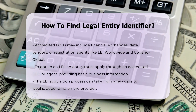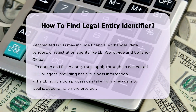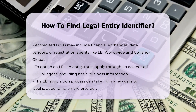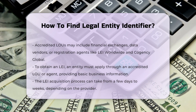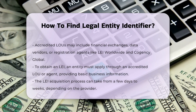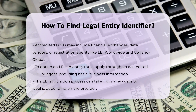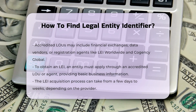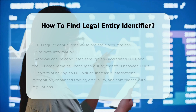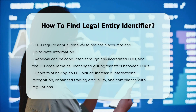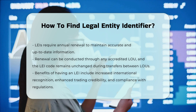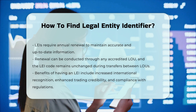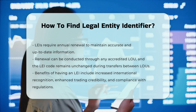Process of obtaining an LEI. To obtain an LEI, a legal entity must submit an application through an accredited LOU or a registration agent. The process typically involves providing basic business information, such as the entity's name, registered address, and ownership details. The LEI can be obtained within a few days to weeks, depending on the service provider. LEIs must be renewed annually to ensure the data remains accurate and up-to-date. This renewal can be done through any accredited LOU, and the LEI code remains unchanged even if transferred between different LOUs.